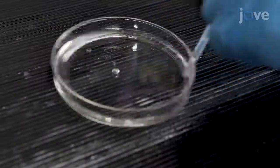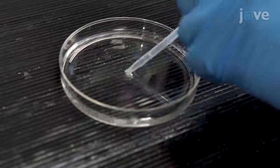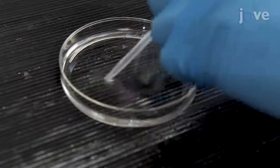Then break up clumps with a plastic pipette and continue to agitate for another two to three minutes until completely de-jellied.